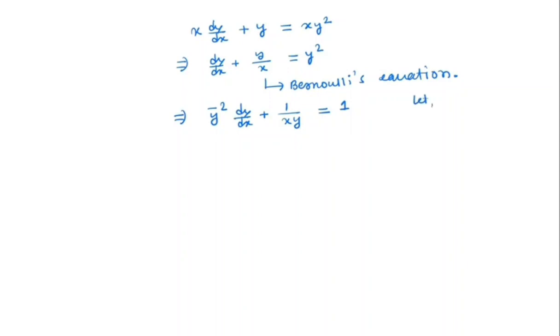Now, we let y inverse is equal to u. So, we get minus y to the minus 2 dy/dx is equal to du/dx. So, we get here y to the minus 2 dy/dx is minus du/dx.